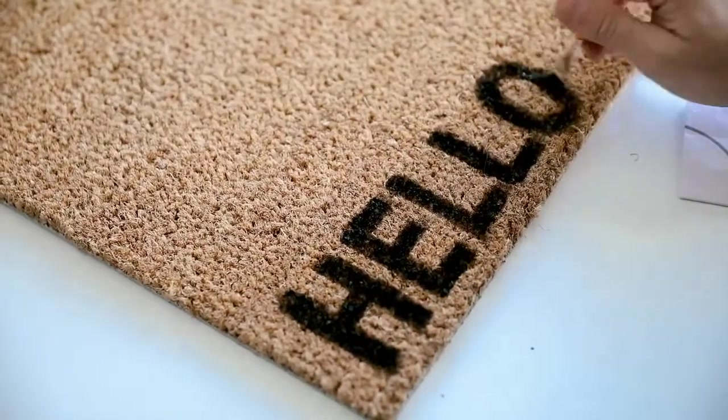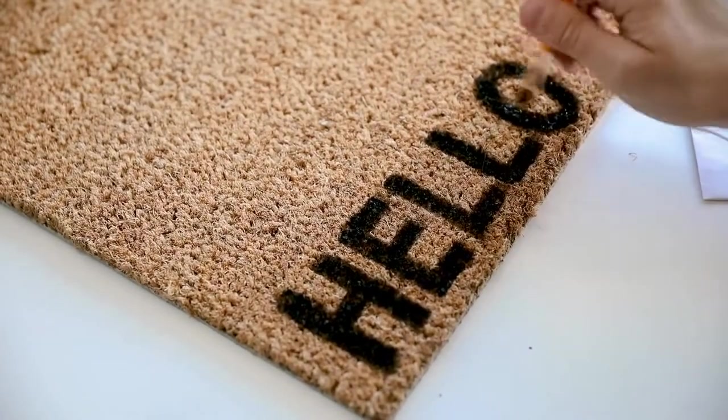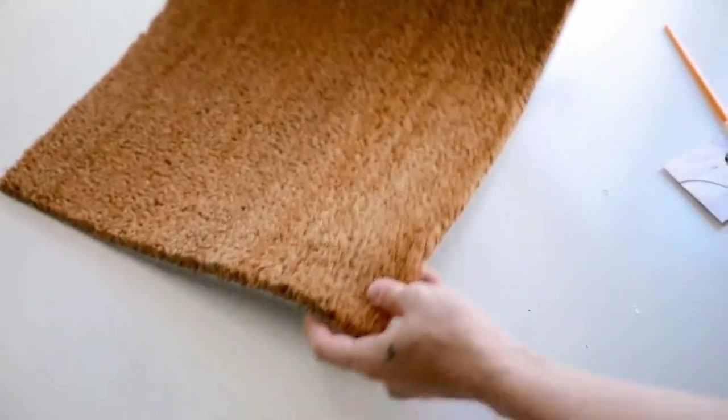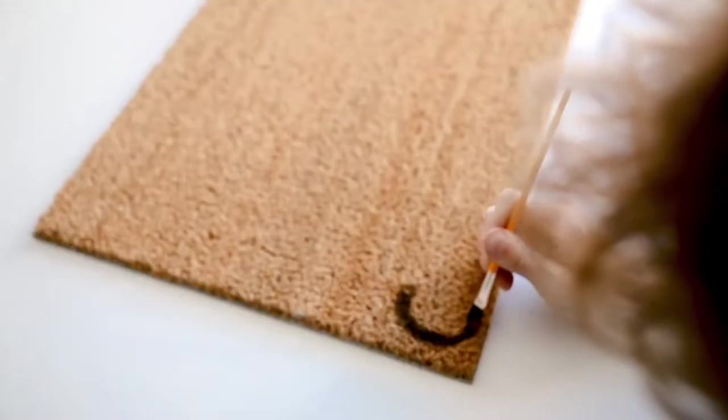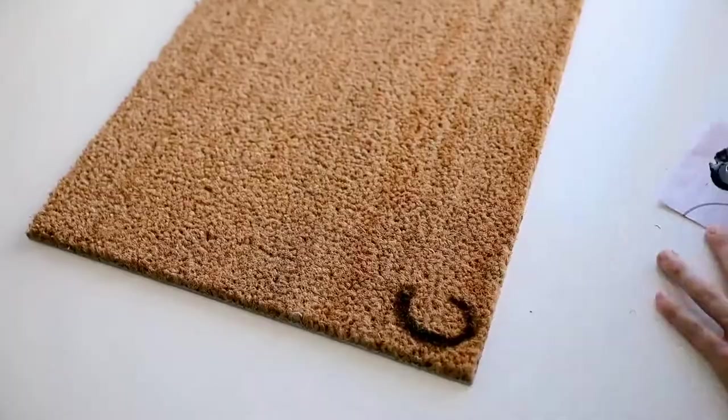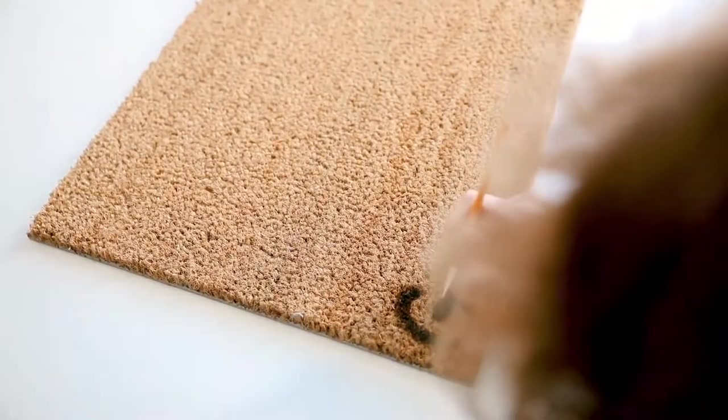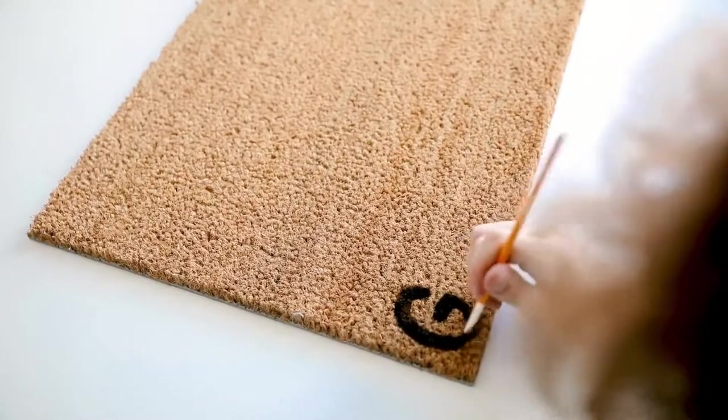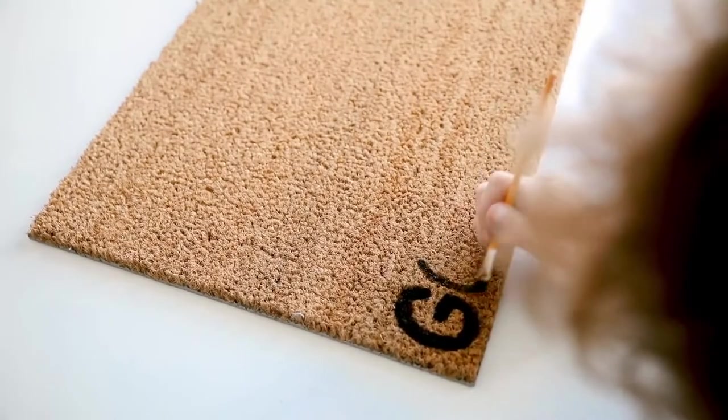Then I flipped the mat over and I'm going to put 'goodbye' on the opposite side. That way when your guests leave they're going to read goodbye in their direction when they leave. So it's kind of like a double meaning doormat. I did goodbye on this side, again I freehanded it.